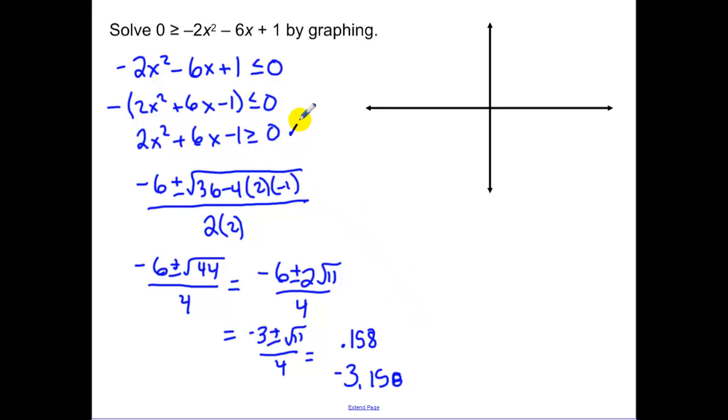So looking at this function, one of my zeros is .158, and then the other one is negative 3.158. Now I'm looking at this one after I've multiplied by a negative one. So that function would open up, so my zeros would be... So our graph would look like that. Now I want to know when this is greater than zero, or when it's above the x-axis.